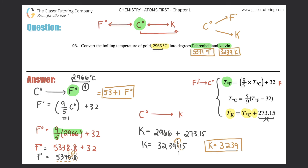So 2966°C equals 5371°F and 3239 K. This problem came down to knowing how to convert between different temperature units — get to know these formulas and it will be much easier. Thanks for tuning in; if this helped, hit like and subscribe. See you in number 94!